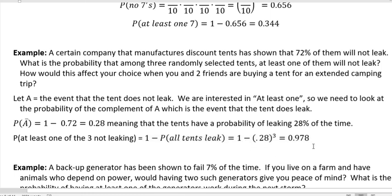We find out that our tents, if we bought three, we'd have a 0.978 probability that we would have at least one tent that wouldn't leak.